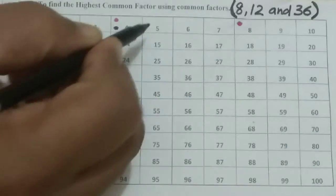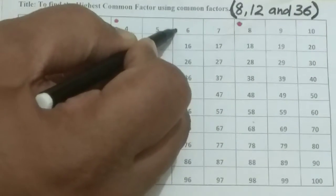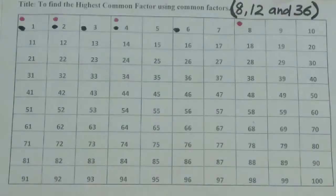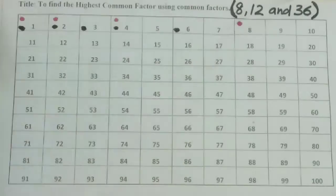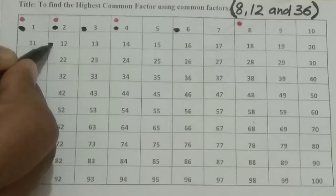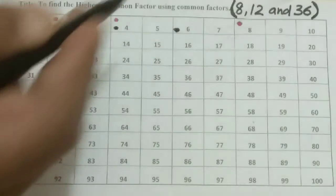5 we can't do. 6 yes, 6 times 2 is 12 so 6 is a factor. Then 7 no, 8 no, 9 no, 10 no, 11 no. Then 12, 1 times 12.